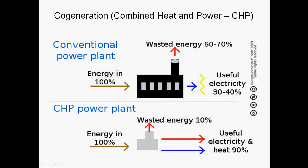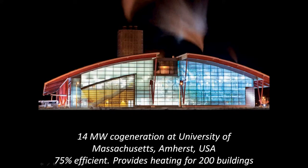Combined heat and power, or cogeneration, addresses the problem of waste heat by siting generation in places where industrial steam, heating, or even cooling is needed. The power plant's waste heat is captured and put to a useful purpose, vastly increasing the efficiency of fuel use — going from about 30 to 40% up to about 90%. Cogeneration is widely used in the United States; here's an example at the University of Massachusetts that provides heating for about 200 buildings.